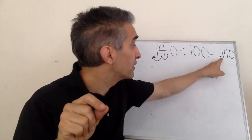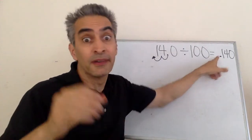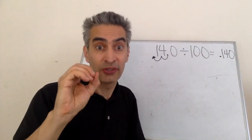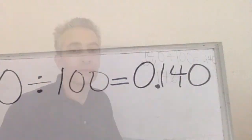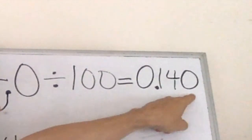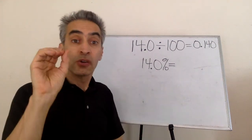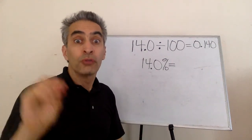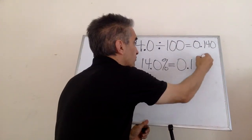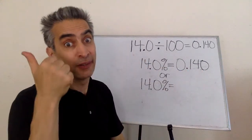See the decimal point? If there's no number in front of it, then we got to write a zero. The answer is 14.0 percent equals 0.140 or we can just get rid of this zero.